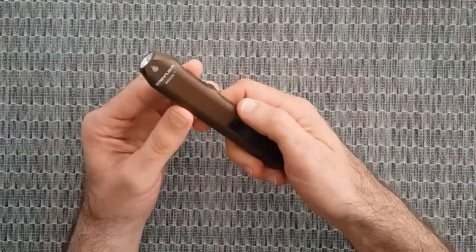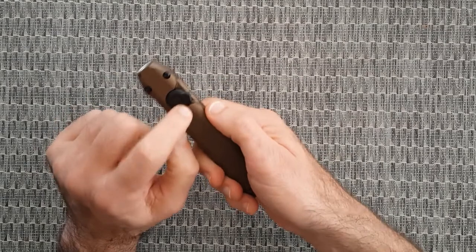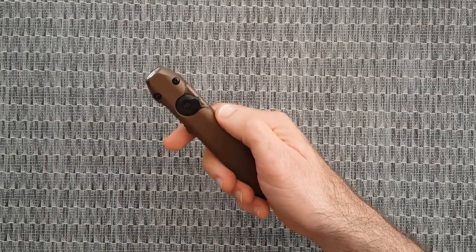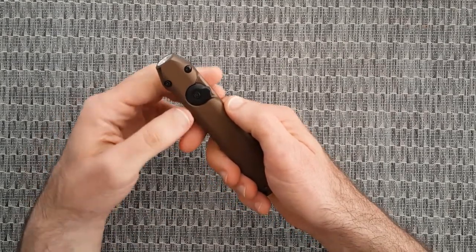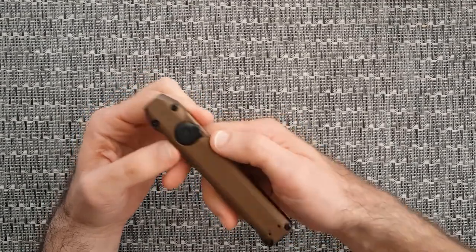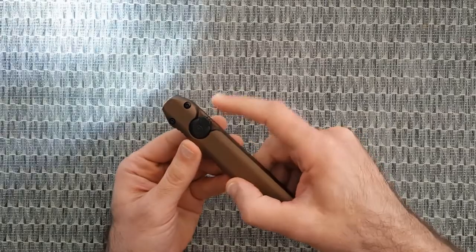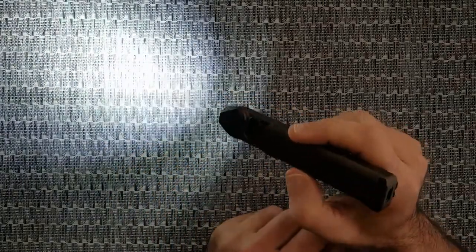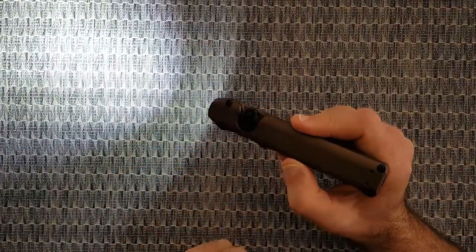It has one phenomenal feature: this intuitive rotating thumb switch that provides tactical control over the constant on and temporary heightened output modes. What does that mean? When you click the first lever, it's going to be on 300 lumens and stay there.